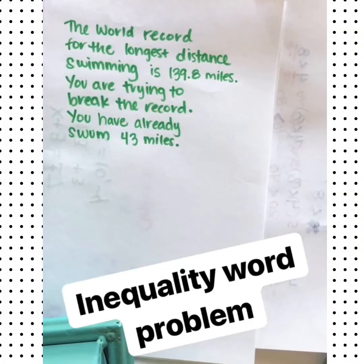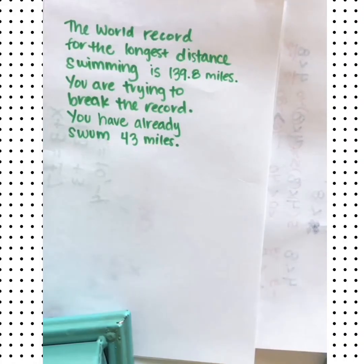Now let's see how inequalities can be used for word problems. So let's read this word problem and then we'll see how inequality can work with it. The world record for the longest distance swimming is 139.8 miles. You are trying to break the record. You have already swum 43 miles.